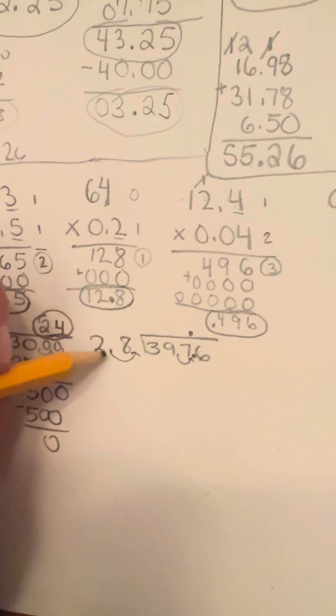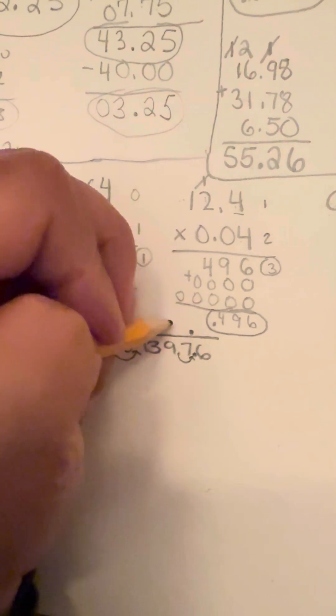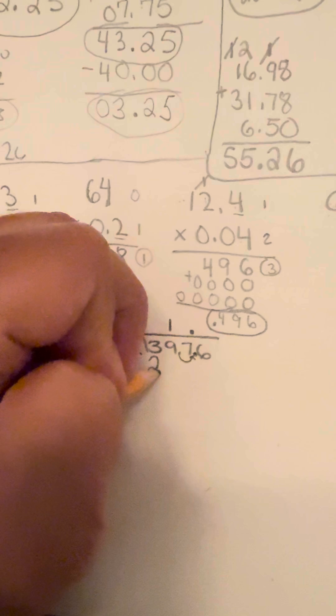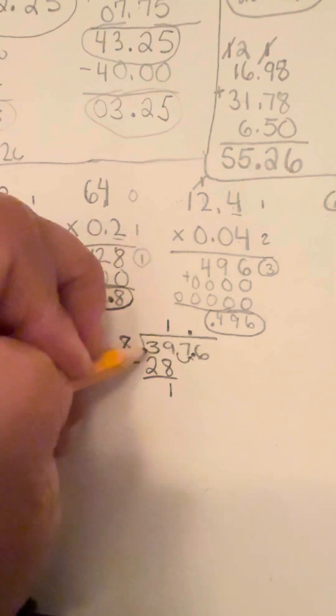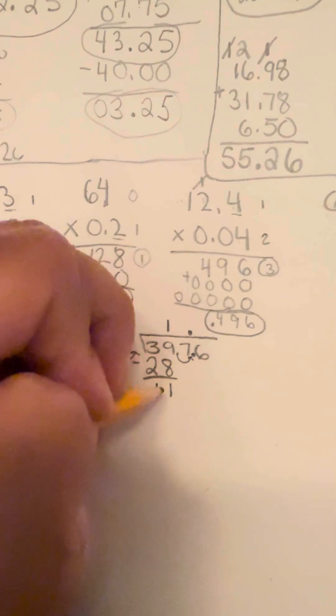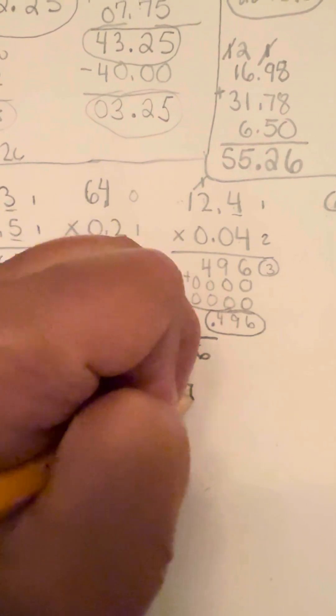And then we're going to go ahead and start to look. So 28 can go into 39 one time without going over. All right. So you're going to subtract 9 minus 8 is going to be 1. 3 minus 2 is going to be 1. And then we're going to bring down the 7.